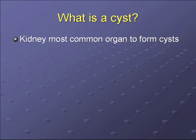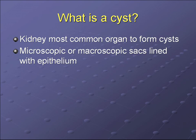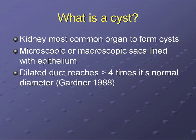What is a cyst? The kidney is the most common organ to form cysts. They are microscopic or macroscopic sacs lined with epithelium. One definition is a dilated duct greater than four times its normal diameter. Cysts can be formed from any part of the nephron.